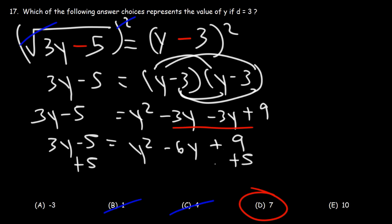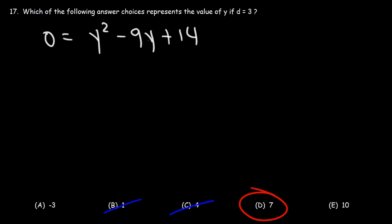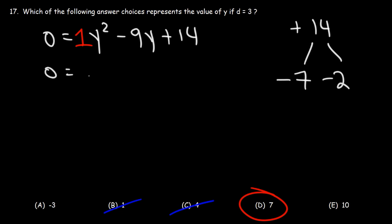Let's add 5 to both sides and subtract both sides by 3y. So we have 0 is equal to y squared. Now negative 6y minus 3y is negative 9y, and 9 plus 5 is 14. At this point we have a trinomial with a leading coefficient of 1, so let's factor it. We need two numbers that multiply to 14 but add to the middle coefficient of negative 9. We know 7 times 2 is 14, and 7 plus 2 adds up to 9. If we use negative 7 and negative 2, it adds to negative 9 but still multiplies to positive 14. So factoring gives us y minus 7 times y minus 2.